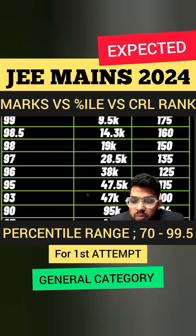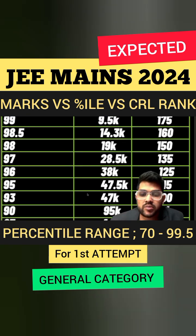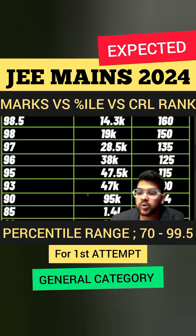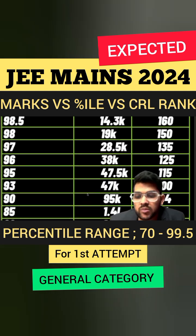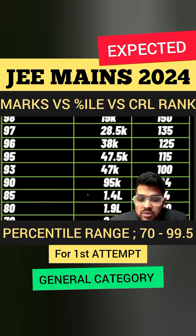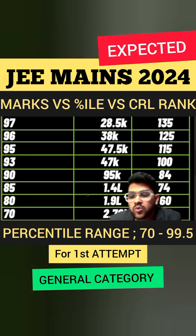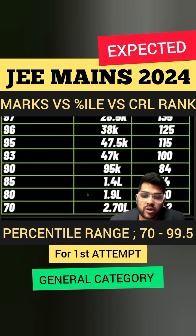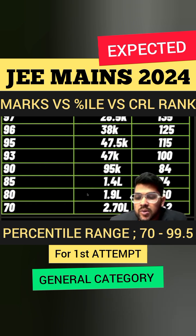For 90 percentile, rank will be around 95,000 and marks requirement is 84. For 85 percentile, 74 marks is required and rank will be around 1.4 lakh. For 80 percentile, 60 marks is required and rank will be around 1.9 lakh. For 70 percentile, 42 marks is required and rank will be around 2.7 lakh.